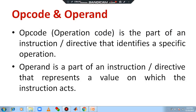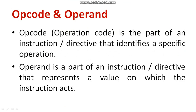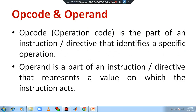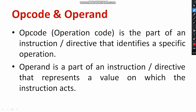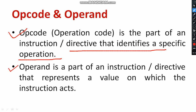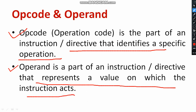You have to understand what is an opcode and an operand — this is very important. An opcode, also known as an operational code, is a part of an instruction and is a directive that identifies a specific operation. An operand is a part of an instruction that represents a value on which the instruction acts. For example, in the instruction MVI A, B — the values A and B are called operands.